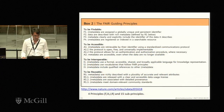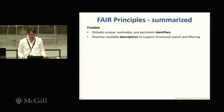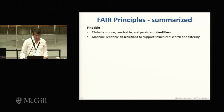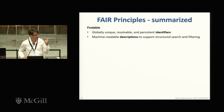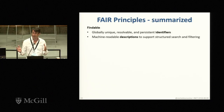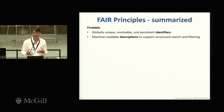What exactly are the FAIR principles? We published a paper with four principles and 15 sub-principles. From a findable perspective, we ask for globally unique, resolvable, and persistent identifiers, and machine-readable descriptions to support structured search and filtering. This is relevant when you're trying to search through GEO datasets and filter results according to a set of characteristics — you need structured content to help you do that.